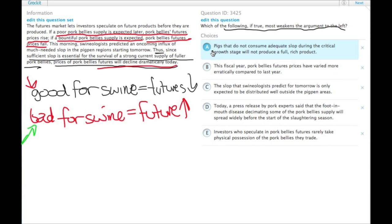So A, pigs that do not consume adequate slop during the critical growth stage will not produce a full rich product. So that might be generally true, but since they're predicting slop, sufficient slop coming in, this doesn't weaken their conclusion.